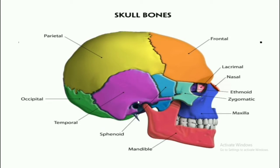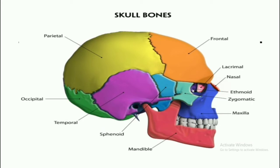The bone surrounding our ears is called the temporal bone. Temporal bones are two in number — one on each side. In between the frontal bone and the temporal bone, there is one bone called the sphenoid bone, which is one in number. There is also one more bone in the skull called the ethmoid bone, located behind the nose, and it is also one in number.